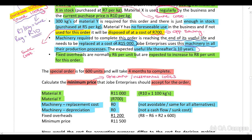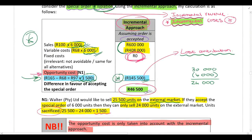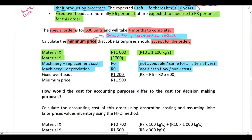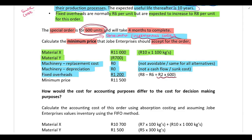Fixed overheads are normally 6 Rand per unit but will increase to 8 Rand per unit for this order. When looking at relevant costing we only consider incremental costs. In Example 1, fixed costs were the same so there was no relevant portion. Here, because fixed costs are changing, the incremental portion — the additional 2 Rand per unit × 600 units — is relevant, as it is an additional cost incurred directly as a result of this order.